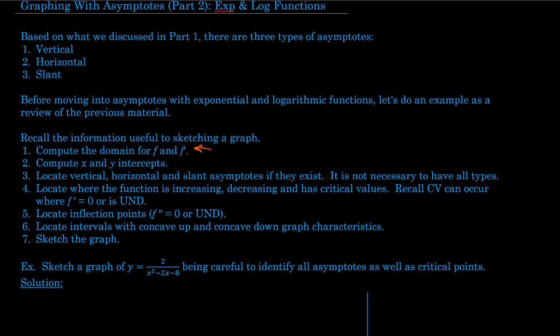The second thing to do is to compute or determine the location of the x and y-intercepts. Remember, x-intercepts occur where the y-value is 0, and y-intercepts occur where the x-value is 0. Third, locate any vertical, horizontal, or slant asymptotes if they exist.